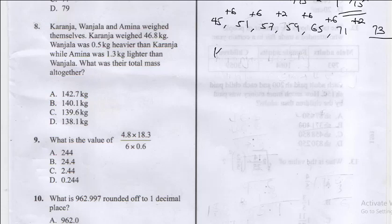Notice Karanje weighed 46.8 kg. Now Wanjala weighed 0.5 kg heavier than Karanje, that's 46.8 plus 0.5. If you add it up you're going to get 47.3 kg.